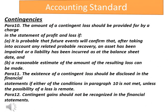Accounting Standard — Contingencies. Paras 10: The amount of a contingent loss should be provided for by a charge in the statement of profit and loss if: (a) it is probable that future events will confirm that, after taking into account any related probable recovery, an asset has been impaired or a liability has been incurred as of the balance sheet date; and (b) a reasonable estimate of the amount of the resulting loss can be made. Paras 11: The existence of a contingent loss should be disclosed in the financial statements if either of the conditions in paragraph 10 is not met, unless the possibility of a loss is remote.